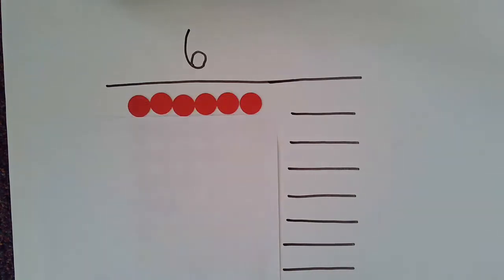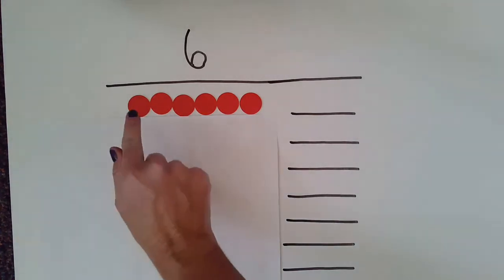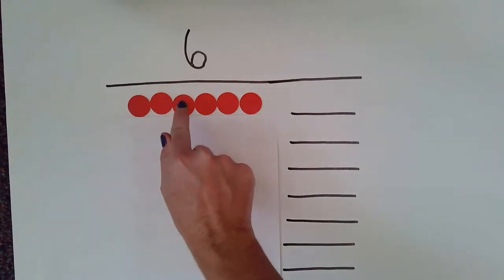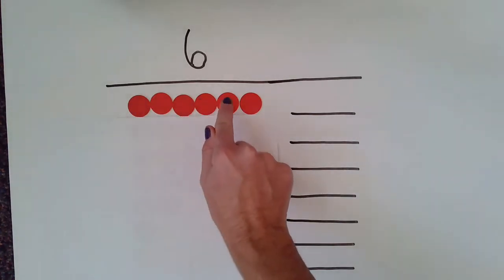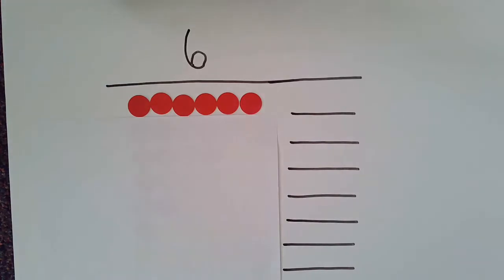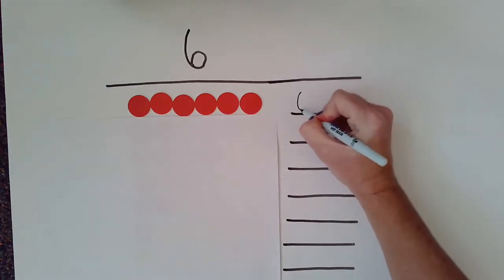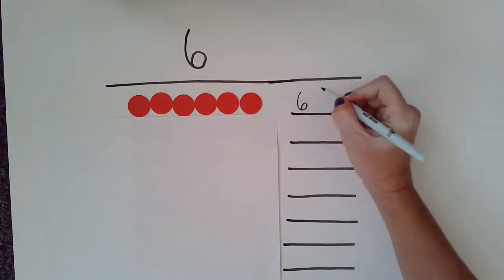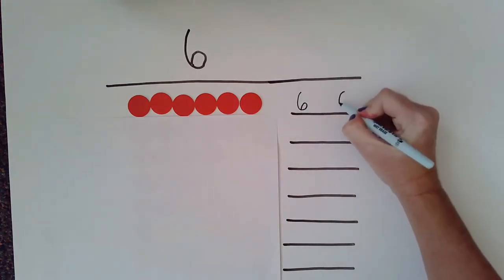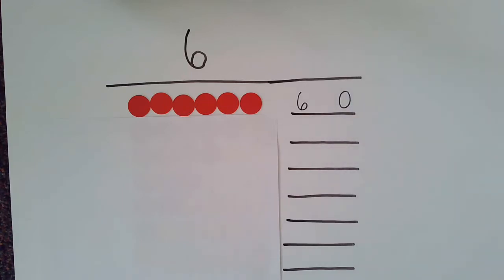Let's look at these red counters. I have one, two, three, four, five, six red counters. That's six and zero — they are number partners for the number six.